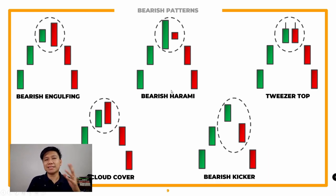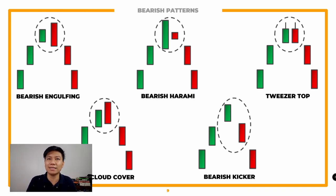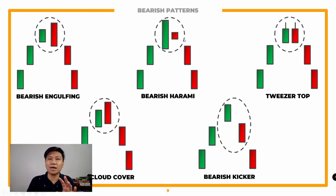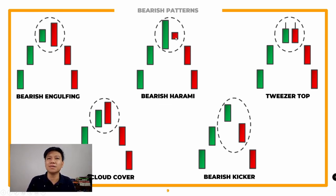Then we have yung bearish harami. Same rule lang din siya paano yung bullish harami — at least 25% yung size nung candlestick the following day, regardless kung may wick siya o wala. Parang nag-alangan na rin — hindi masyadong tumaas yung price. It opened in between yung price ng previous day, so humina na rin yung buying and yung support niya is humina na rin in terms of pushing the price further. Possible na magda-downtrend na rin siya.